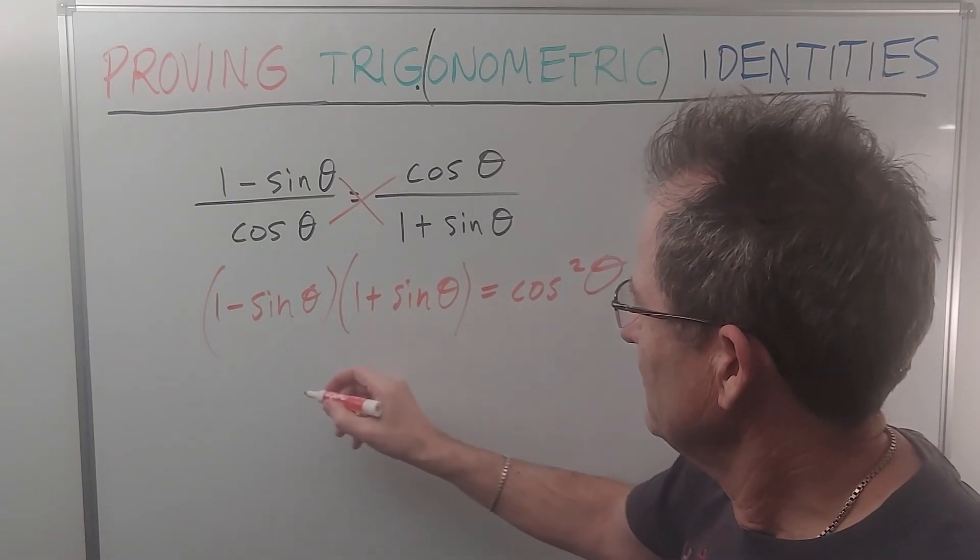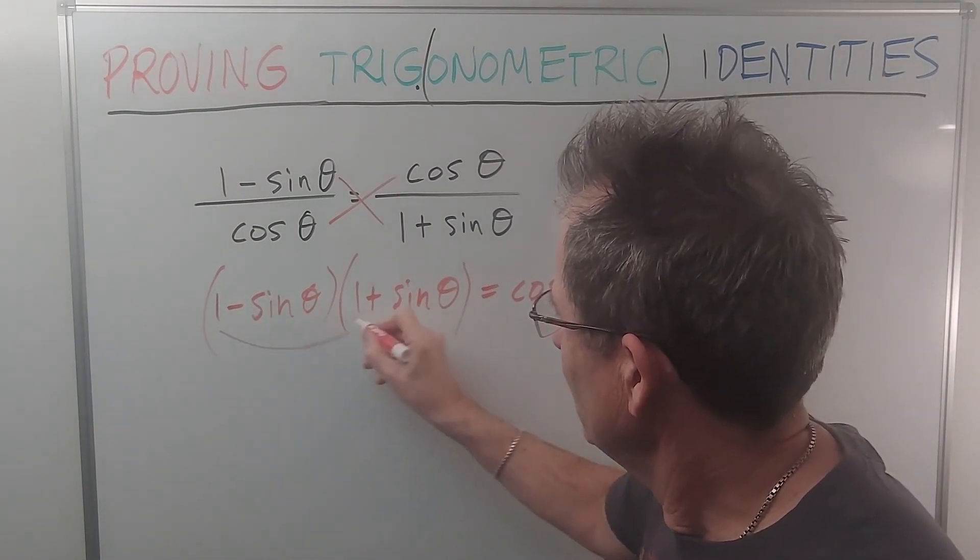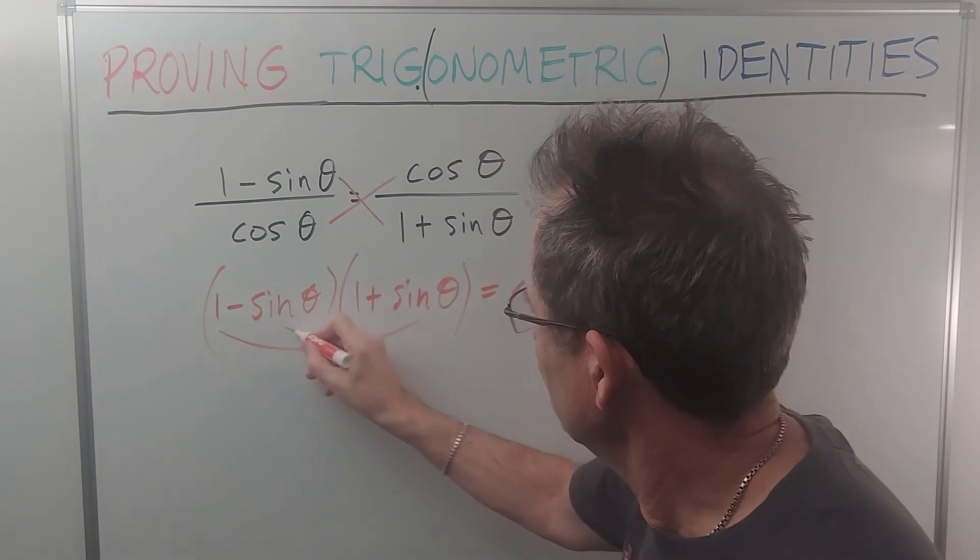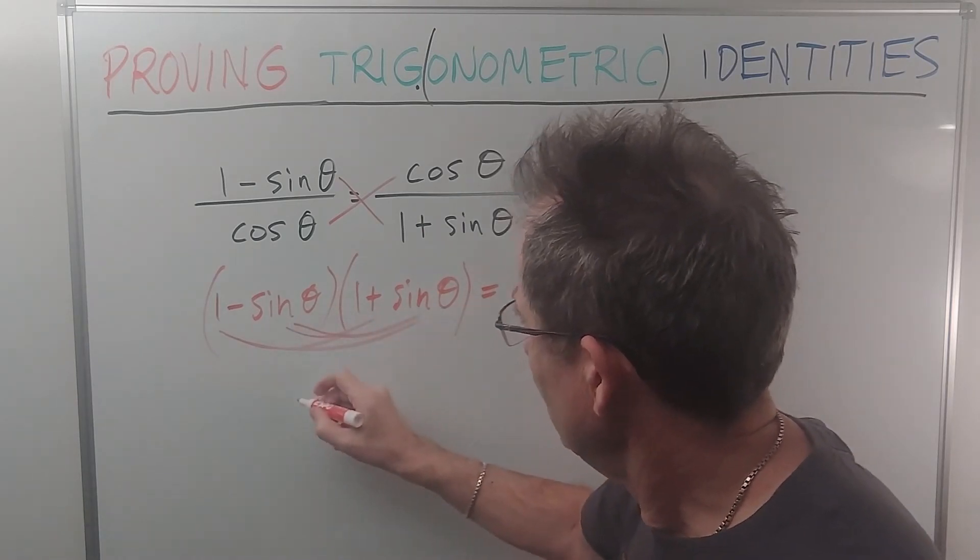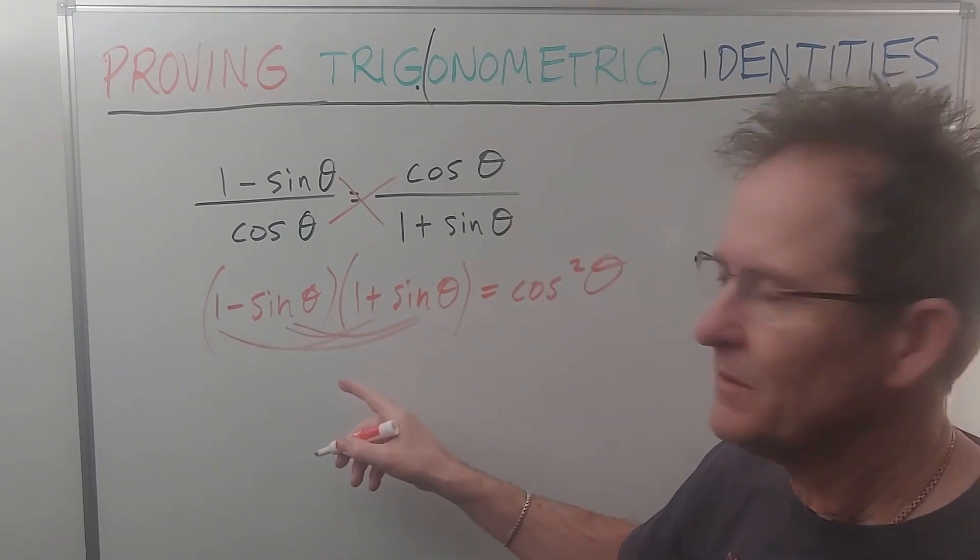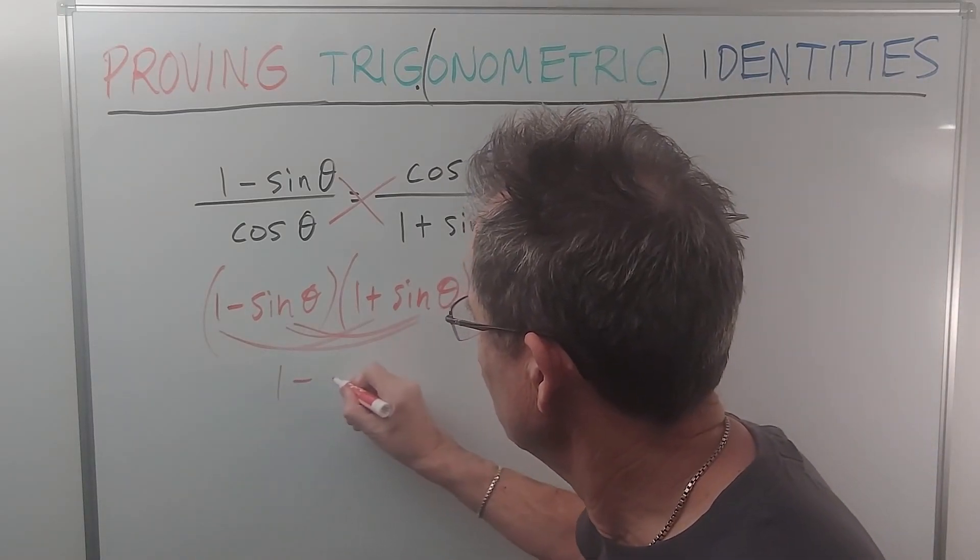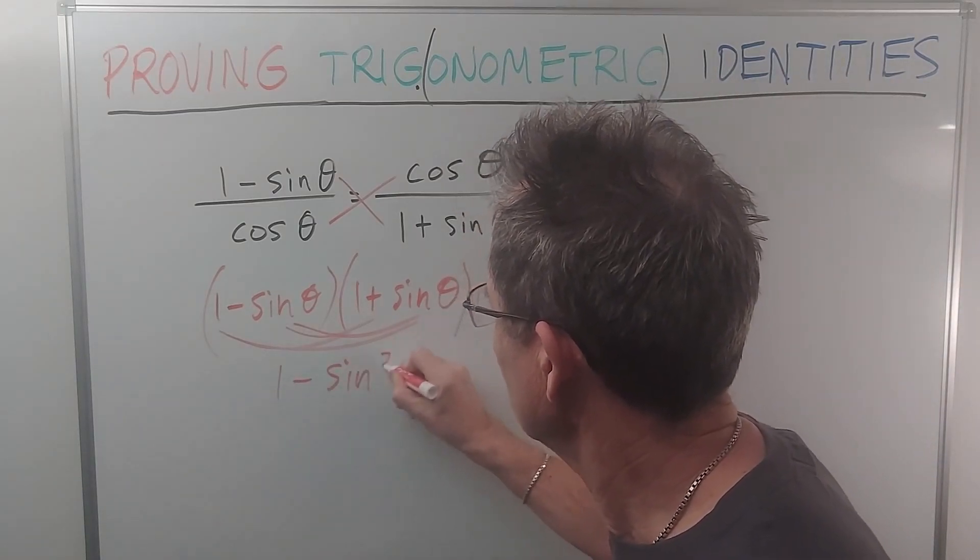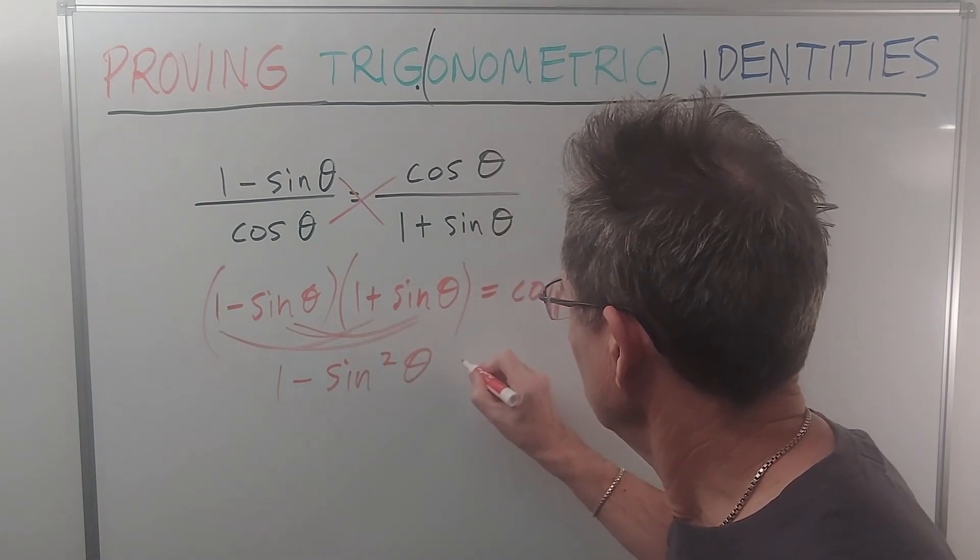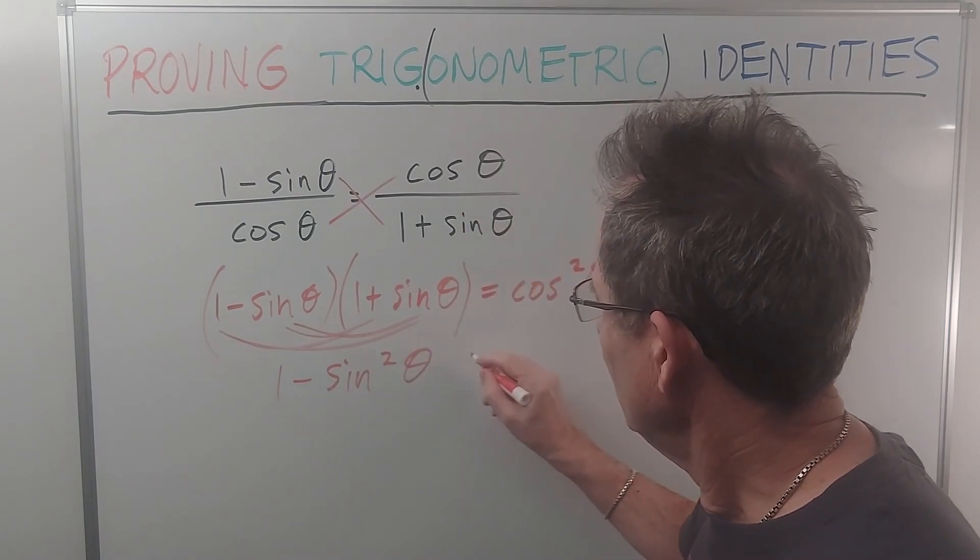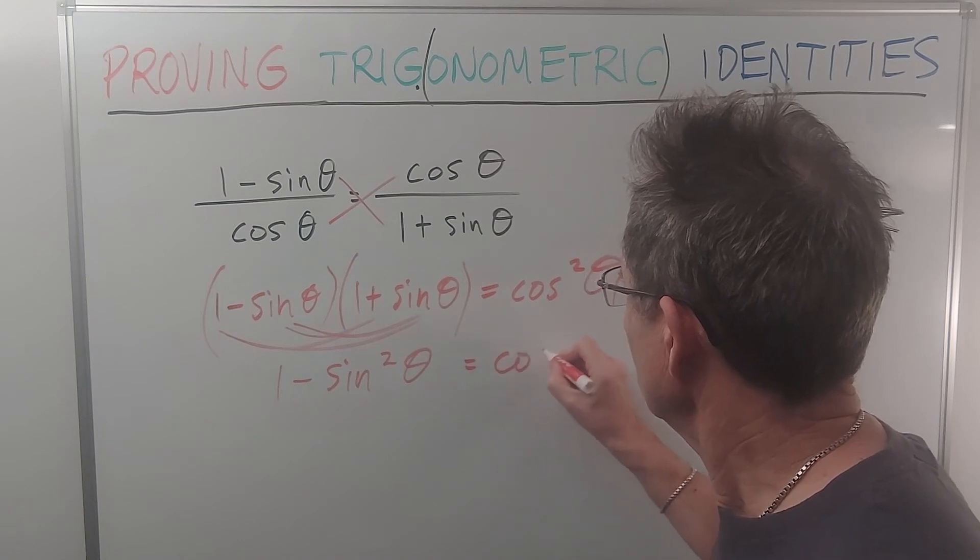I get 1 minus sine theta times 1 plus sine theta equals cos squared theta. If I multiply this out, I can do that times that and that, that times that and that. Two of the terms will add up to zero, the negative sine theta and the positive sine theta. So I could just skip that step and write down 1 minus sine squared theta equals cos squared theta.